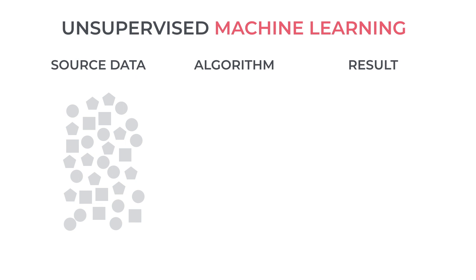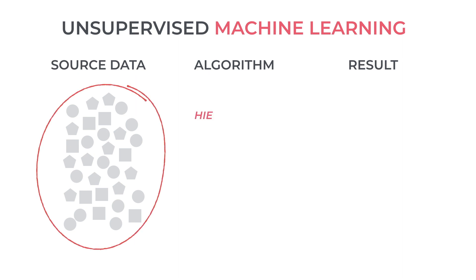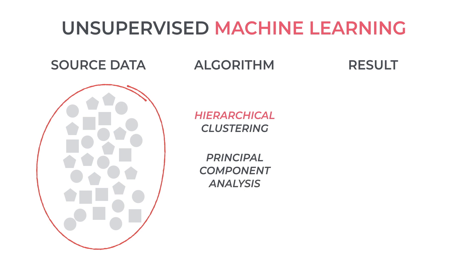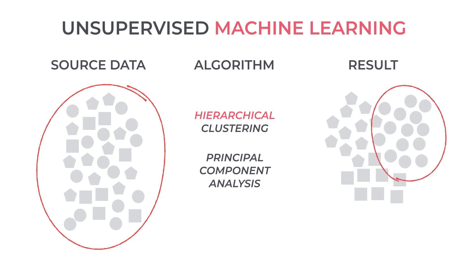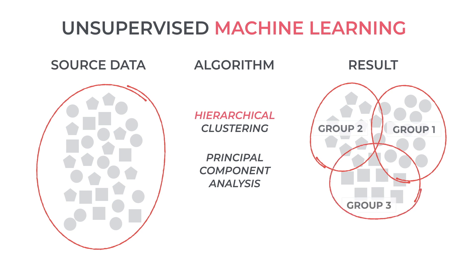With unsupervised machine learning methods, we start with a dataset — typically a table of elements, like these shapes. We can use a clustering method, for example hierarchical clustering, a method that essentially seeks to identify groups based on similarity or dissimilarity. Or we can use a dimensionality reduction method, for example principal component analysis, or PCA. This method will use data variance to project the elements onto a hyperplane that we can visualize, and as a result will provide us with insight into our data and the different types or groups of elements that are present. In some cases we can use the results to draw other conclusions, for example that the groups are based on shapes of elements within the group.